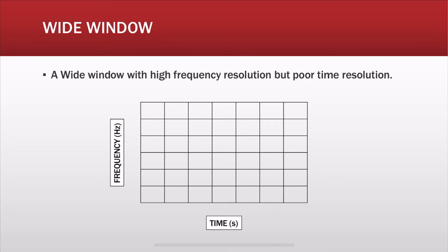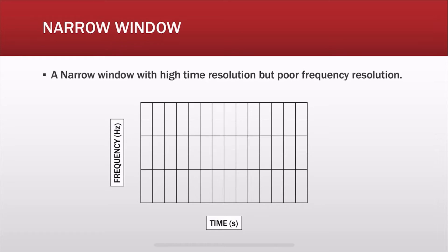If you choose a wide window, you get high frequency resolution at the expense of time resolution. And if you choose a narrow window, you get high time resolution at the expense of frequency resolution.